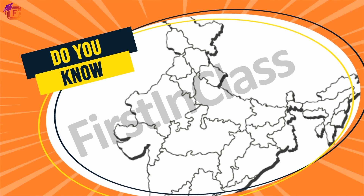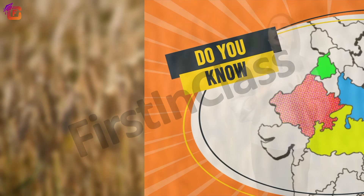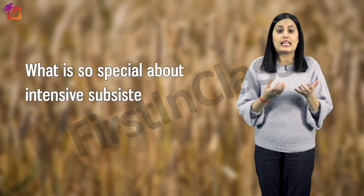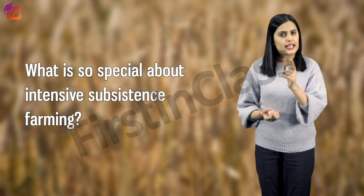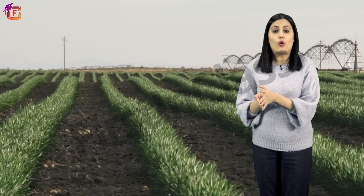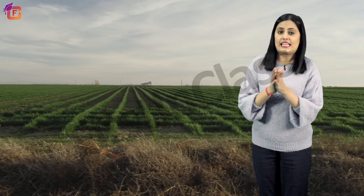Intensive subsistence farming is practiced in Punjab, some parts of Rajasthan, Uttar Pradesh, and Madhya Pradesh in India. It is characterized by high doses of biochemical inputs and extensive irrigation used in an intensive manner. Intensive subsistence farming is mainly used for obtaining higher production.